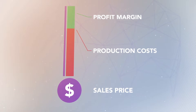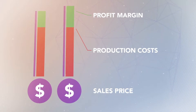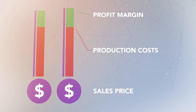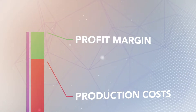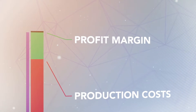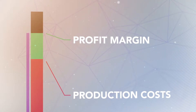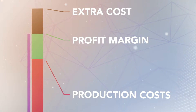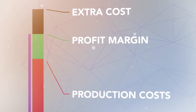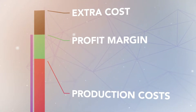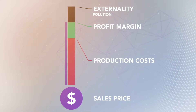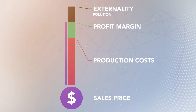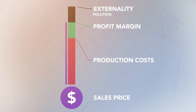If profits are too high, more producers enter the market and push down prices. But market mechanisms sometimes fail. One very prominent market failure occurs when the good or service produced creates a cost that someone other than the producer or the consumer pays — something an economist calls an externality. Pollution, such as mercury runoff from a coal plant or tailpipe emissions, is a classic example of an externality.